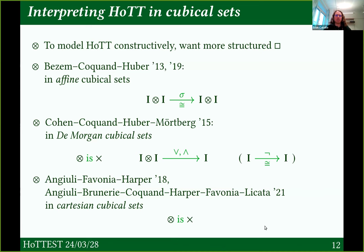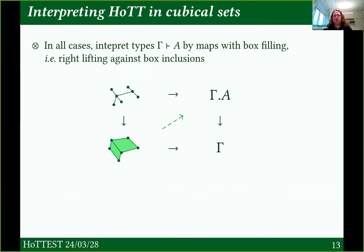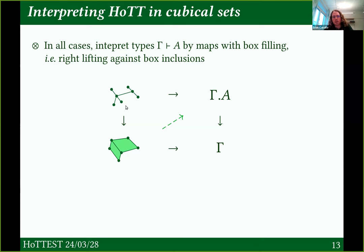We've got this great variety of cube categories where we can interpret HoTT, and in all these cases, we're interpreting types by maps with a kind of box filling. A type is interpreted as a map of cubical sets — the bottom is the interpretation of the context, the top is the interpretation of the type. In order to count as types, they have to have the right lifting property against box inclusions. This is a relativized version of being a cubical set with box filling: whenever I see an open box in my type that sits over a filled-in box in my context, I can fill that open box in my type.